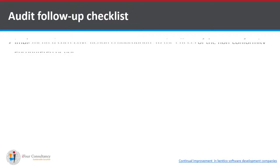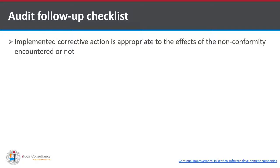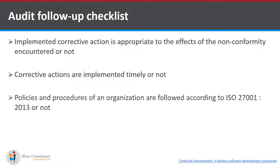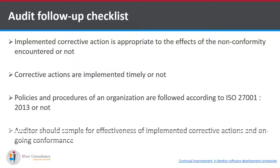The checklist for audit follow-up includes: whether the implemented corrective action is appropriate to the effects of the non-conformity encountered; whether corrective actions are implemented in a timely manner — daily, weekly, or monthly; whether policies and procedures of an organization are followed according to audit criteria such as ISO 27001:2013; and the auditor should sample for the effectiveness of implemented corrective actions and ongoing conformance.